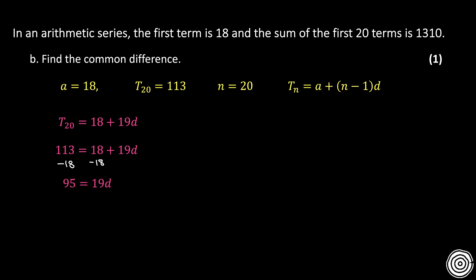I'm going to subtract both sides by 18, leaving me with 95 is equal to 19D. Divide both sides by 19, leaving me with D is equal to 5.